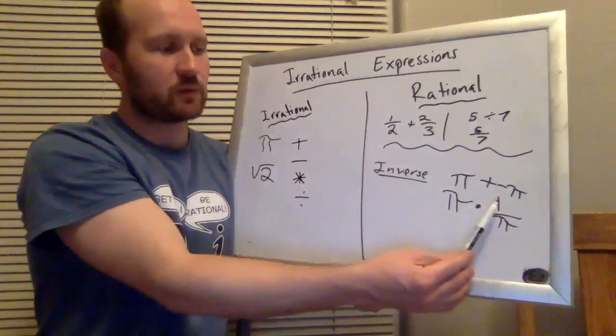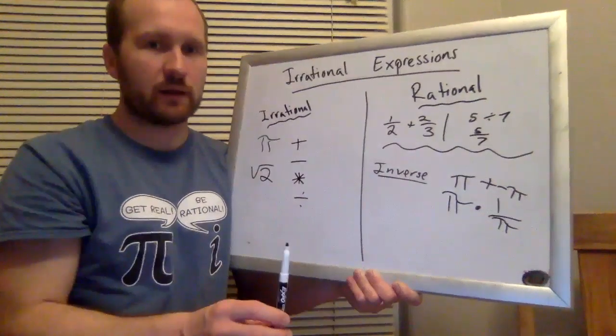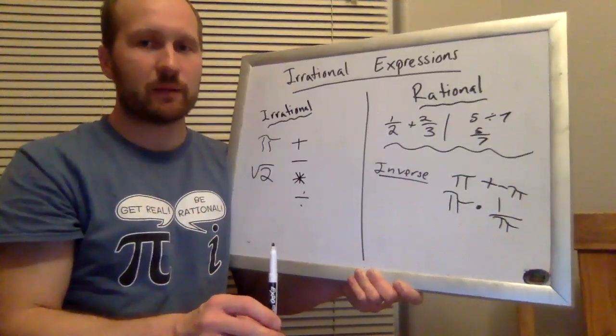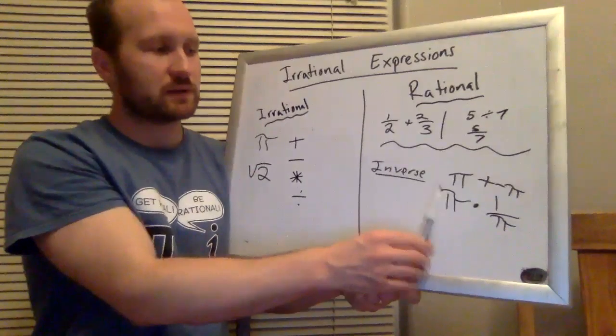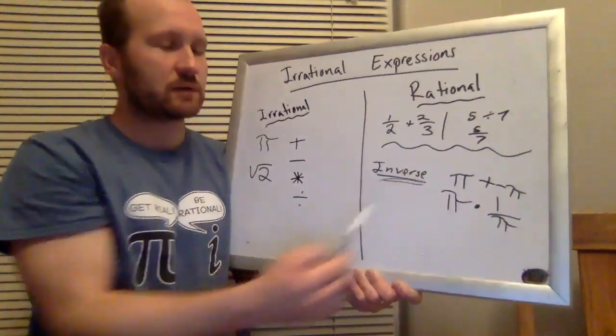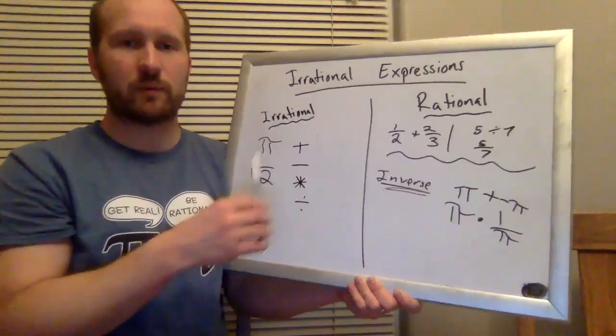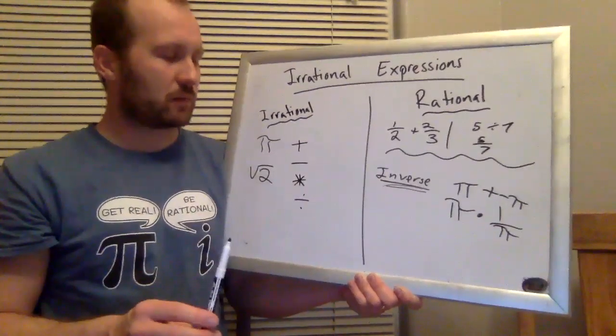And pi times one over pi is just going to be one, the same thing as pi divided by pi. So those inverses, anytime we see an inverse, can kind of turn an irrational number back into a rational number.